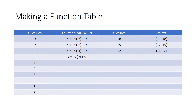For the fourth row I plug in the x value zero: negative three times zero plus nine. I type that in the calculator and get an answer of nine. I take the x value and the y value and write it into the points column, which is zero, nine.